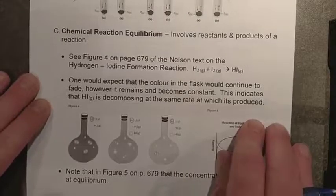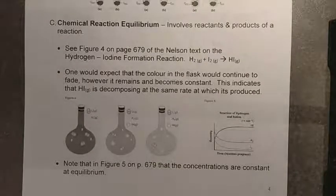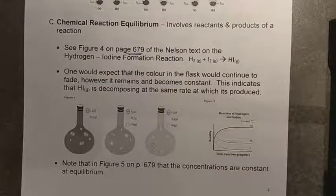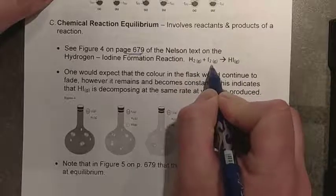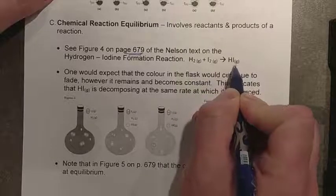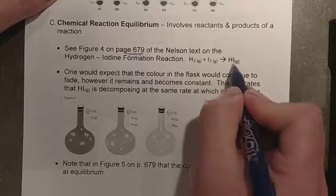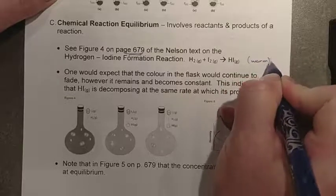What we do want to concentrate on is chemical reaction equilibria. This is the more important topic — this is what the whole unit is about — because we're looking at reactions that are no longer quantitative. A good example, discussed in detail on page 679, is the hydrogen-iodine formation reaction: elemental hydrogen gas reacting with elemental iodine gas to form hydrogen iodide gas. Iodine is normally a solid, but this reaction occurs under very warm conditions.